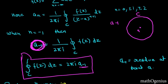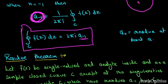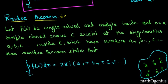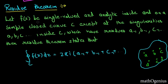Now let's see what is the residue theorem. This is just the expanded version of this. Now we will not have only one singularity, we will have many singularities. So let f(z) be a single valued analytic inside and on a simple closed curve C except at the singularities a, b, c inside C.